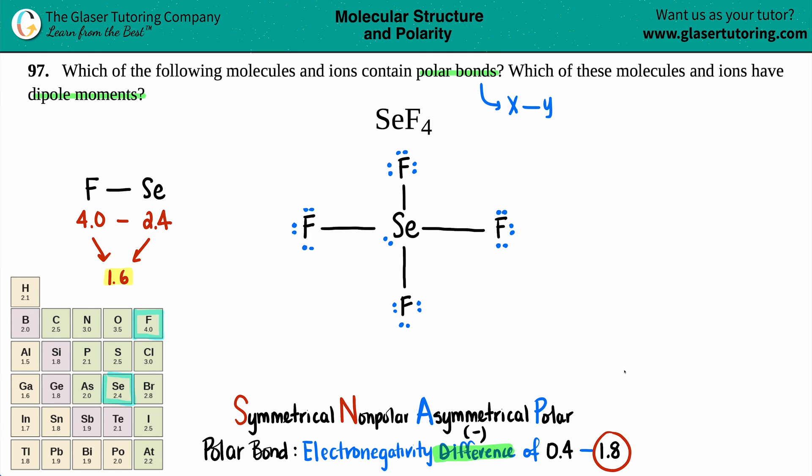And just know that if you go beyond 1.8, you are an ionic bond. So in this case though, we're just right there. So this is a polar bond. So this molecule contains polar bonds. Now, as I'm coloring, let's talk about the dipole moment.